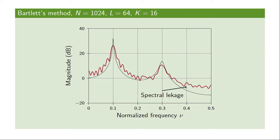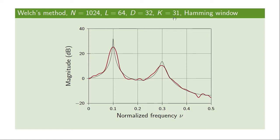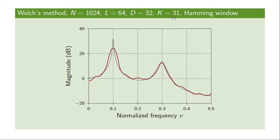Returning to the example with Bartlett's method applied to 1024 data samples divided into length-64 blocks giving 16 blocks: if we apply Welch's method with 50% overlap, we get 31 blocks instead of 16, applying the Hamming window when overlapping. This has two effects: the variance is reduced compared to Bartlett's method, and because we're using a window, we simultaneously reduce the spectral leakage. The deviation between estimated and true power spectrum in low-power regions is reduced.